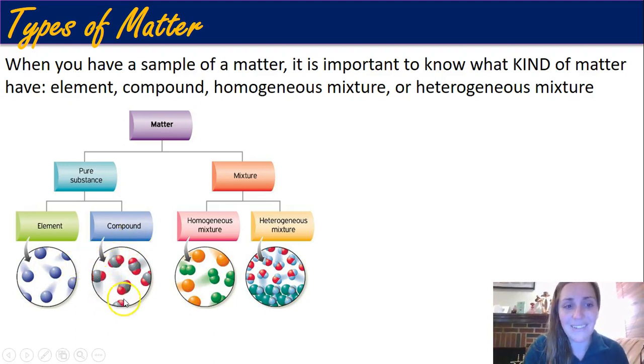Versus a compound, it's also a pure substance because if you see everything in here looks the same, but those circles aren't alone anymore. The atoms are bonded to something else and it's in a consistent pattern, so this has a one-to-two ratio, one gray to two red, for every single one in here.